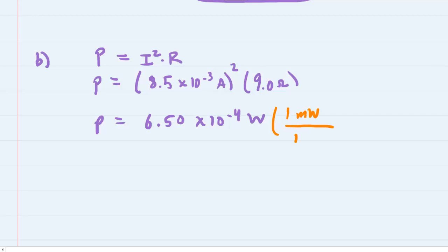If we wish to convert that into milliwatts, we can do that. We know that 1 milliwatt is 10 to the minus 3 watts. So basically take your answer and multiply it by 1 over 10 to the minus 3, and you will get .65 milliwatts. So this would be the correct answer to part B of the question.